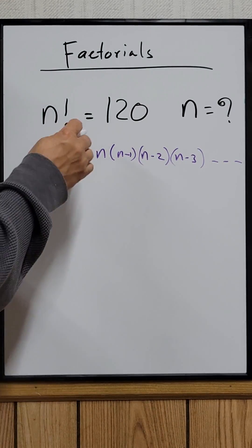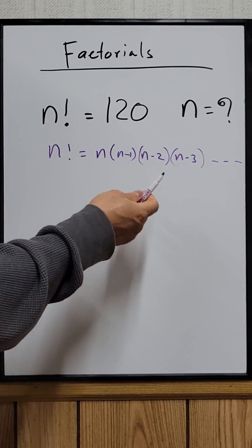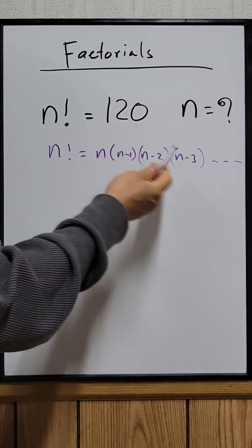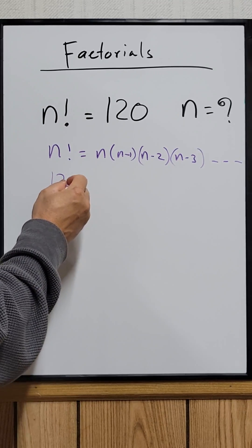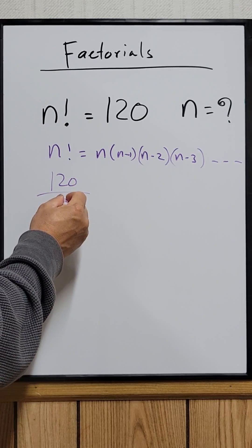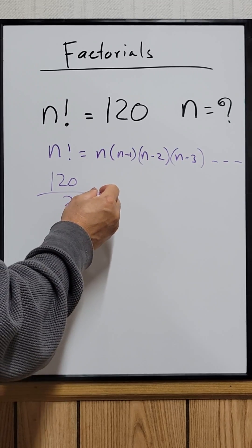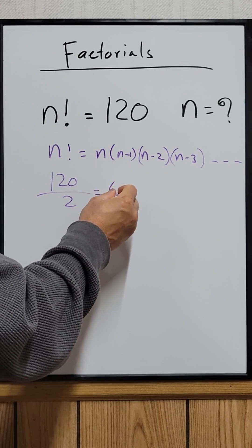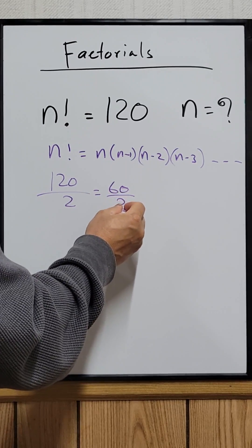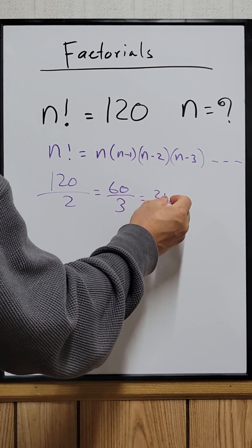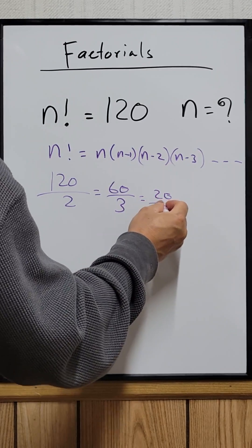For this problem right here we need to do it backward instead, so you work it backward. So you take 120 divided by 2 which equals 60, and then 60 you divide by 3 equals 20, and 20 divided by 4